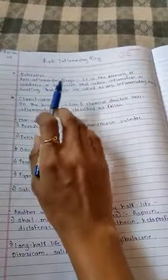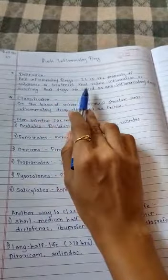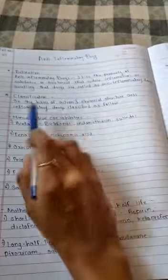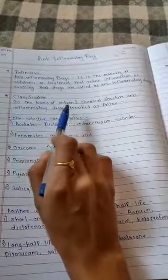Hi friends, my topic name is anti-inflammatory drug. The definition: anti-inflammatory drug is the property of a substance or treatment that reduces inflammation or swelling. These drugs are called anti-inflammatory drugs.